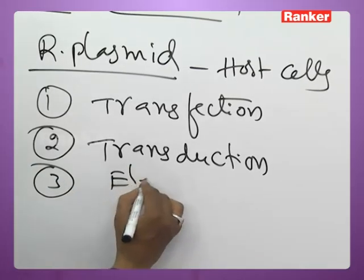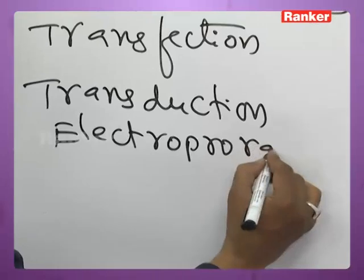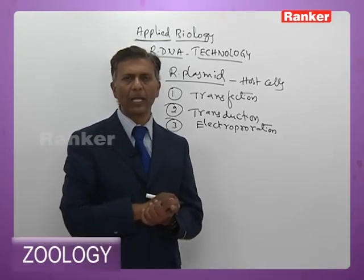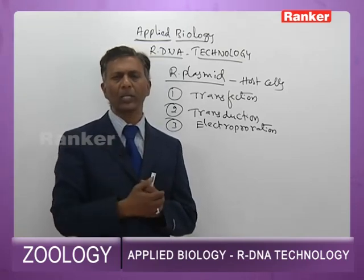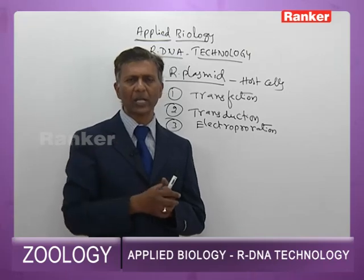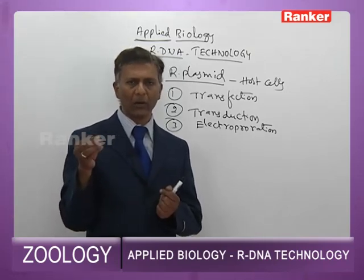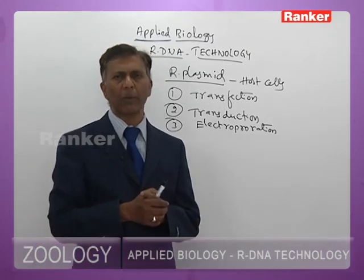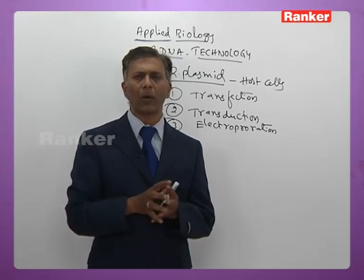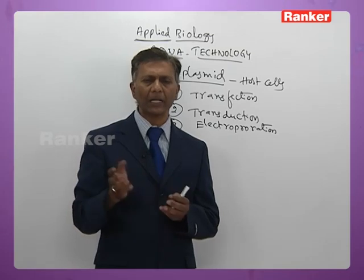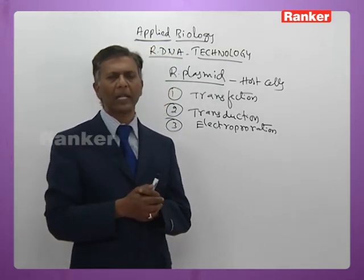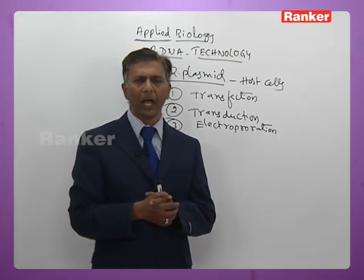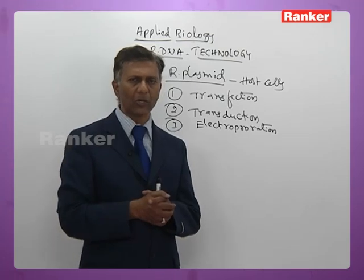The third method is the electroporation method. Certain buffer solutions — mostly phosphate buffer solutions — are used. E. coli bacteria are placed in a suspension of phosphate buffers so that the phosphate buffers make perforations in the outer wall of the bacterial cell. As a result, plasmids can easily penetrate into the bacteria through these perforations. This method is called electroporation.